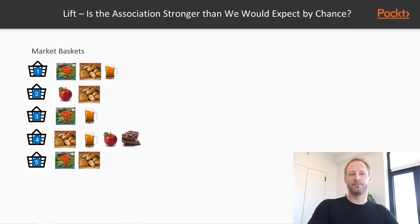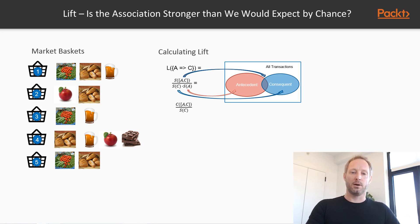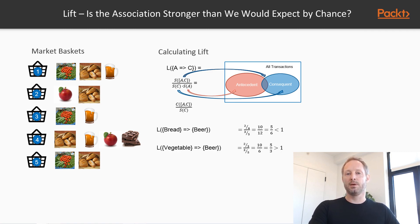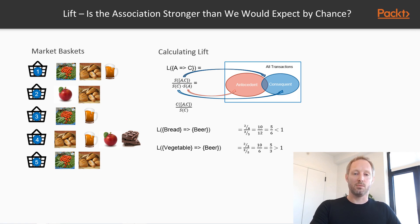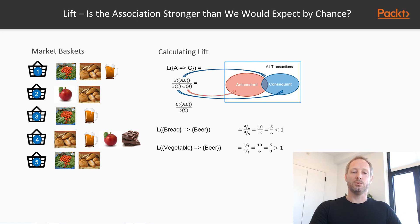The last metric is lift. Lift is important because it tells us how much more likely these associations are than we would expect by chance. To calculate lift for a rule, we take the support for the rule and divide it by the product of the support for the antecedent and the support for the consequent — in other words, the confidence in the rule divided by the support for the consequent. In our case, the lift for bread implies beer is (2/4) divided by (3/5), which is 5/6, less than 1. In contrast, the lift for the rule vegetables implies beer is (2/3) divided by (3/5), which is 5/3, greater than 1. So the second rule appears more interesting.